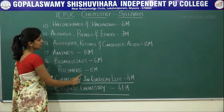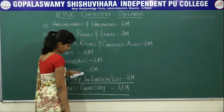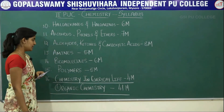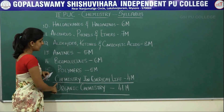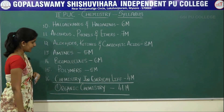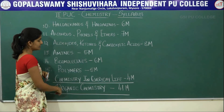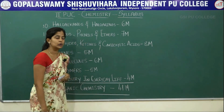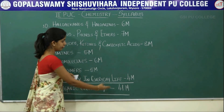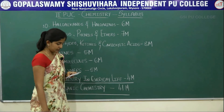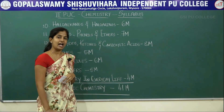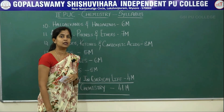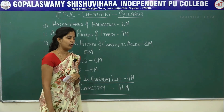Polymers has a total weightage of 5 marks, consisting of one 5-mark question. The last chapter of the organic branch is chemistry in everyday life, with a total weightage of 4 marks, divided into two 2-mark questions.